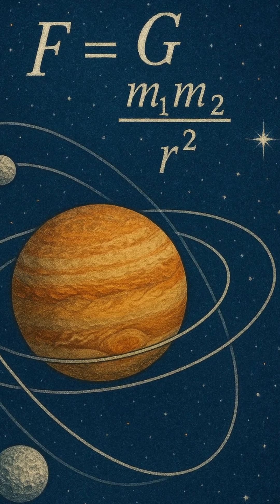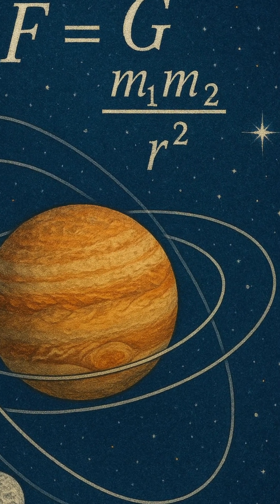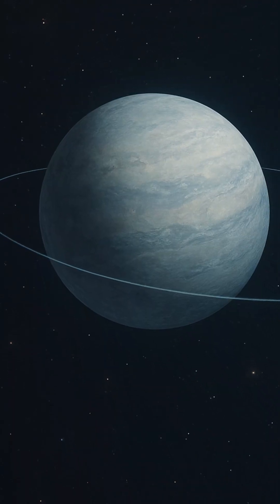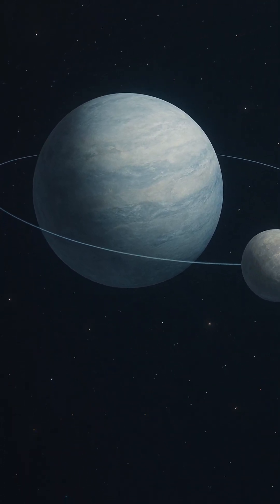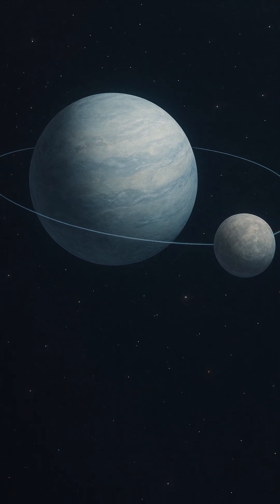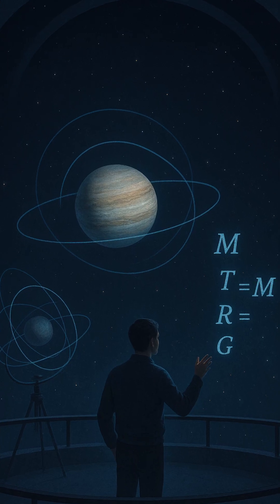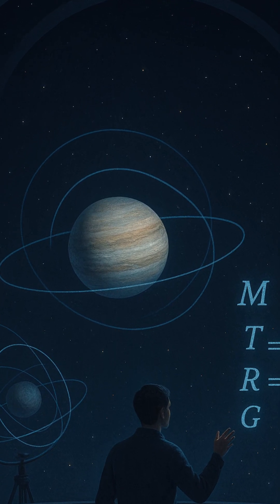In the end, it's all about the math. Centuries-old equations, still unshaken, allow us to peer into the darkness of space and weigh the giants orbiting our sun. Without ever touching them, we know their heft, their makeup, and even their secrets, proving that in the vast silence of the cosmos, gravity still speaks the loudest.